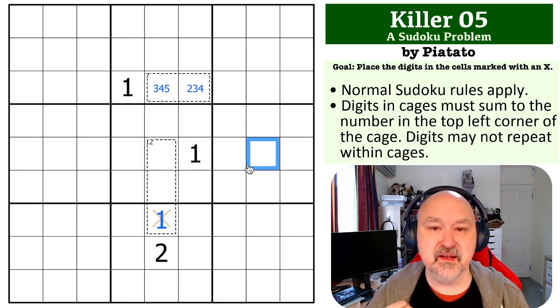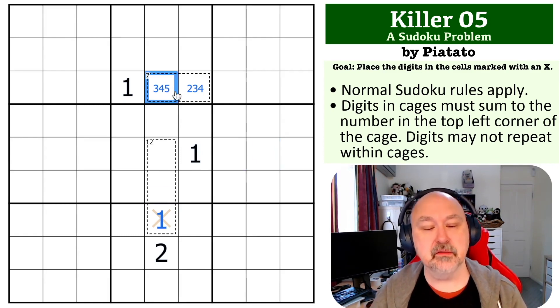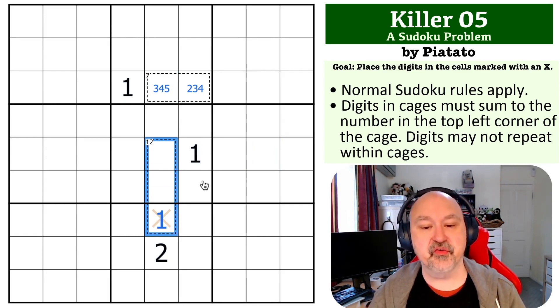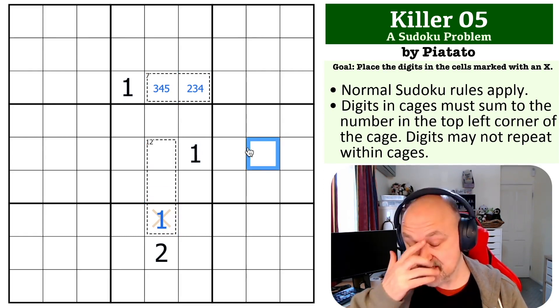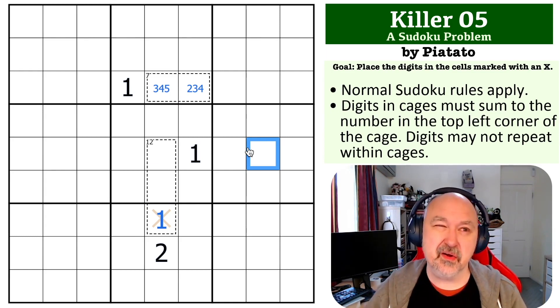I really love this sort of deduction where you're getting pressure from a cell with multiple possible options, but those options are one of the possible complete sets for a cage. And that knocks that out. Very, very, it's not a, I wouldn't say it's common,